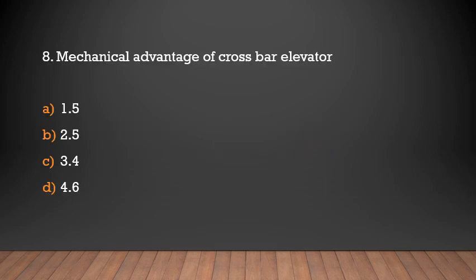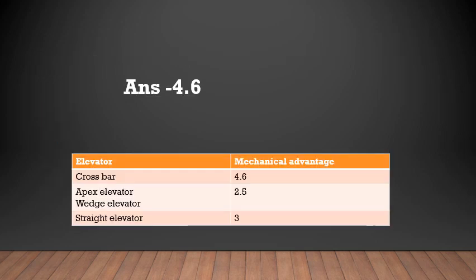Mechanical advantage of crossbar elevator: 1.5, 2.5, 3.4, or 4.6? 4.6. Mechanical advantage of crossbar elevator is 4.6. In apex elevator and wedge elevator, it is 2.5. In straight elevator, 3.